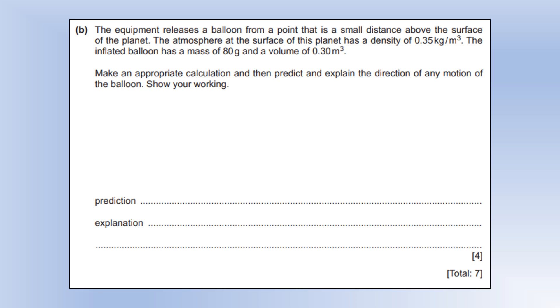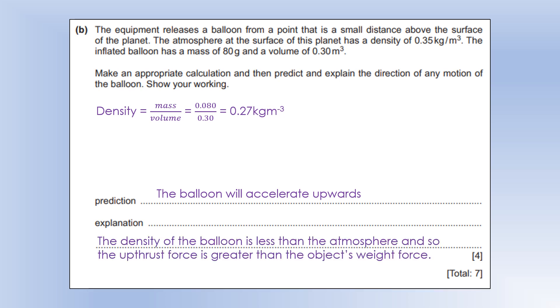The equipment releases a balloon from a point above the surface of the planet. The atmosphere has a density of 0.35 kilograms per metre cubed. The inflated balloon has a mass of 80 grams and a volume of 0.3 metres cubed. Make an appropriate calculation and predict and explain the direction of motion. So I'm going to calculate the density of the balloon itself. We get 0.27. So the balloon is going to accelerate upwards. The reason is that the density of the balloon is less than the atmosphere, so the upthrust force is going to be greater than the object's weight force.